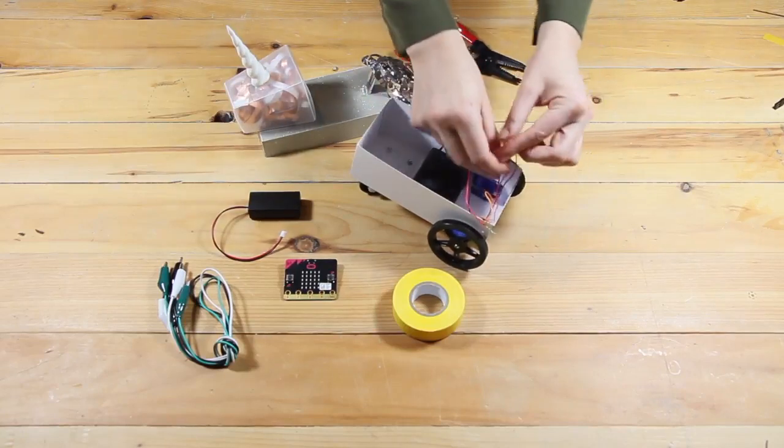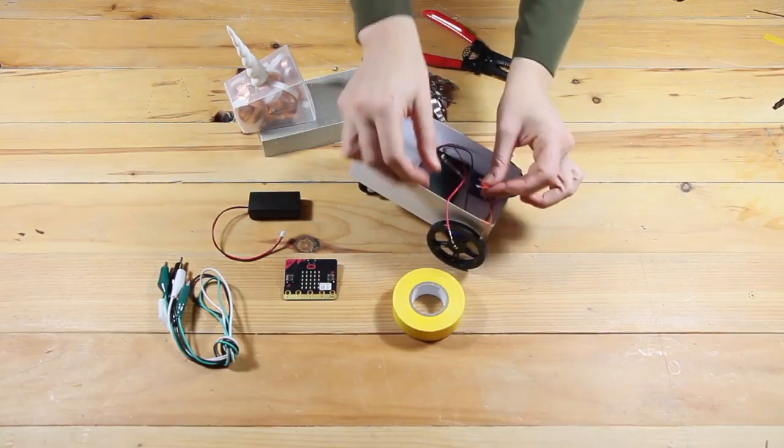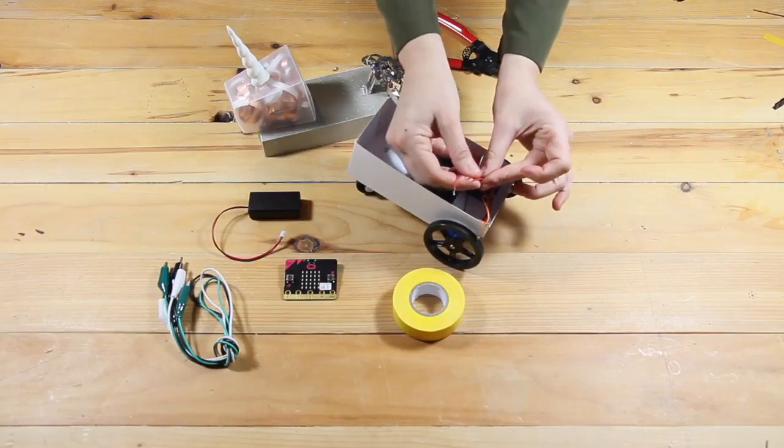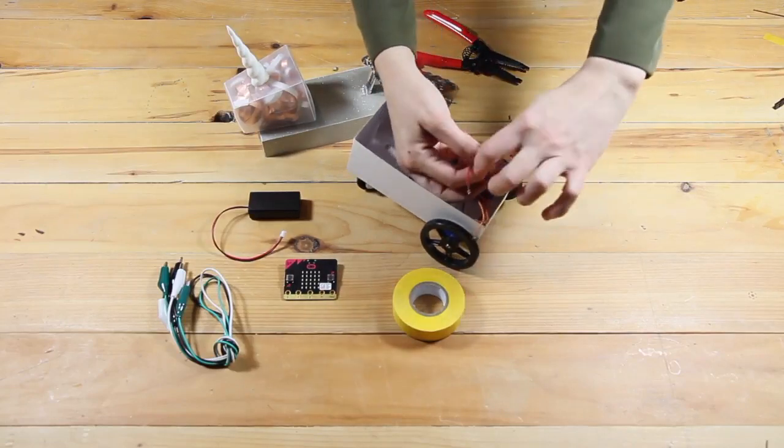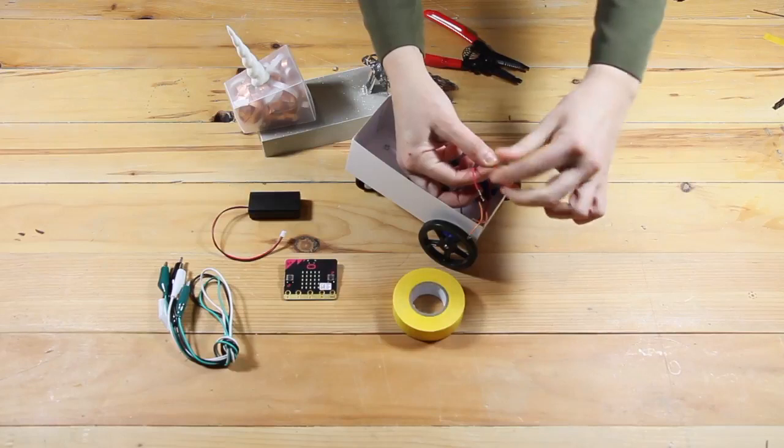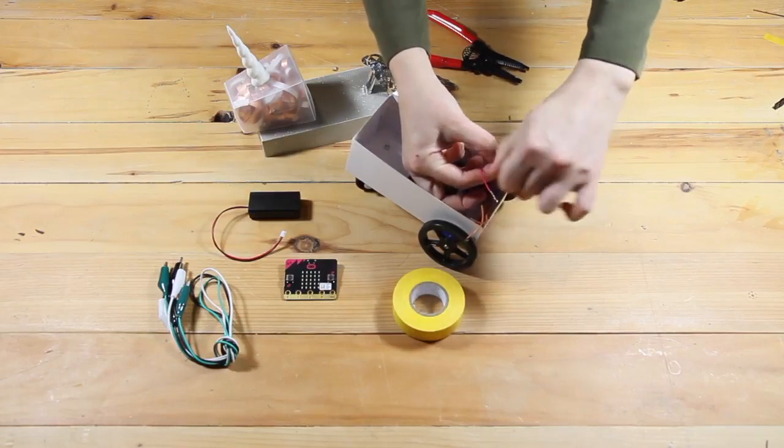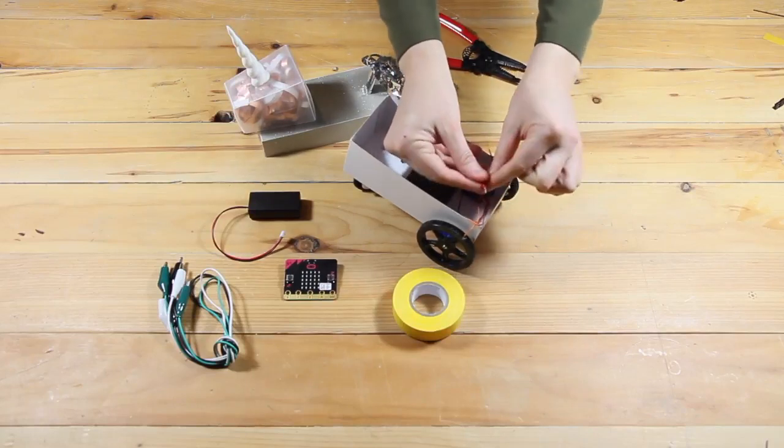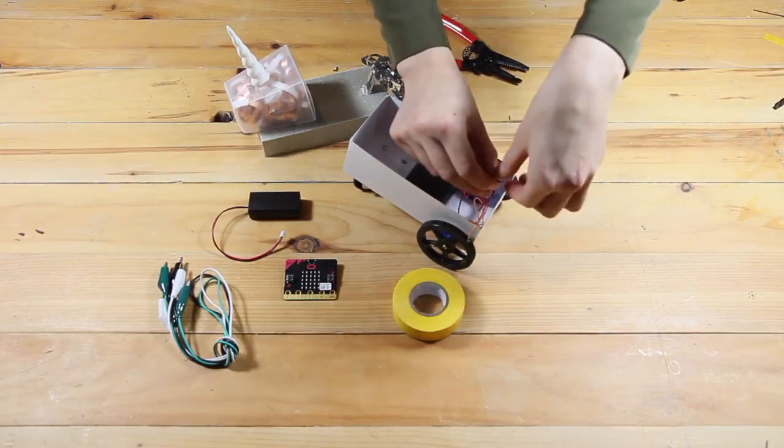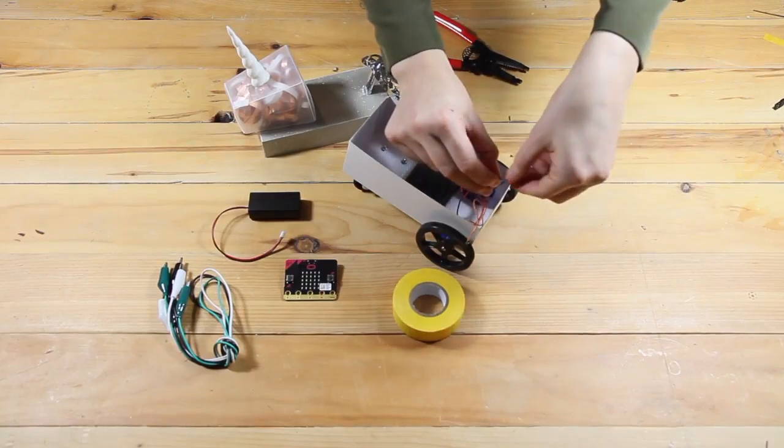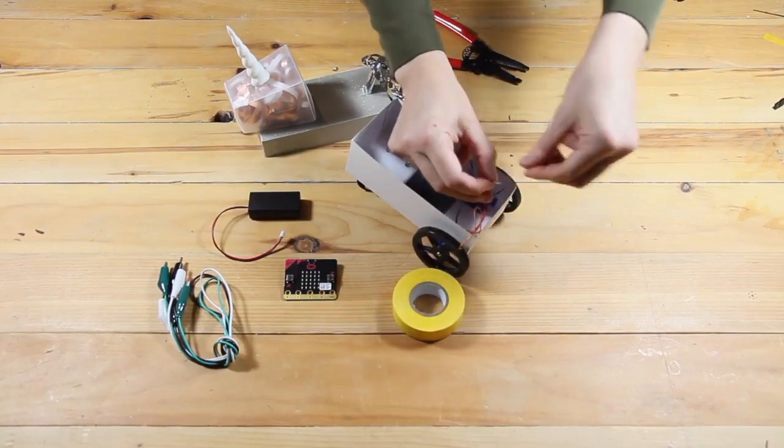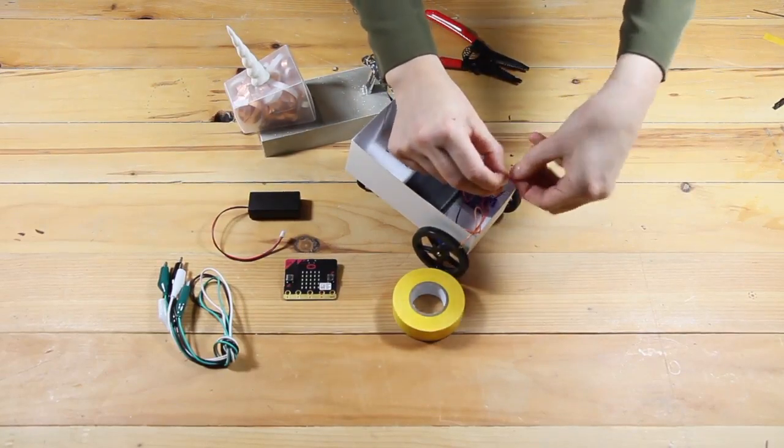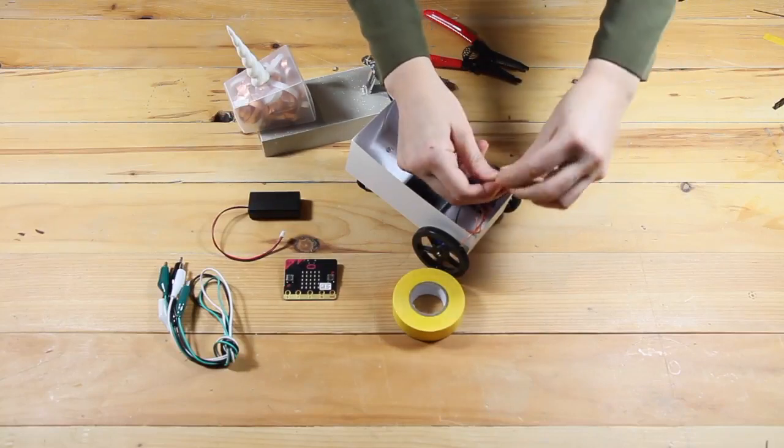Now take the red wires from each servo and the red wire from the battery pack and twist them all together using your fingertips. I did the servo wires first and then wrapped the wire from the battery around both of those red wires from the servos. This creates a nice secure connection. These red wires are the power wires.